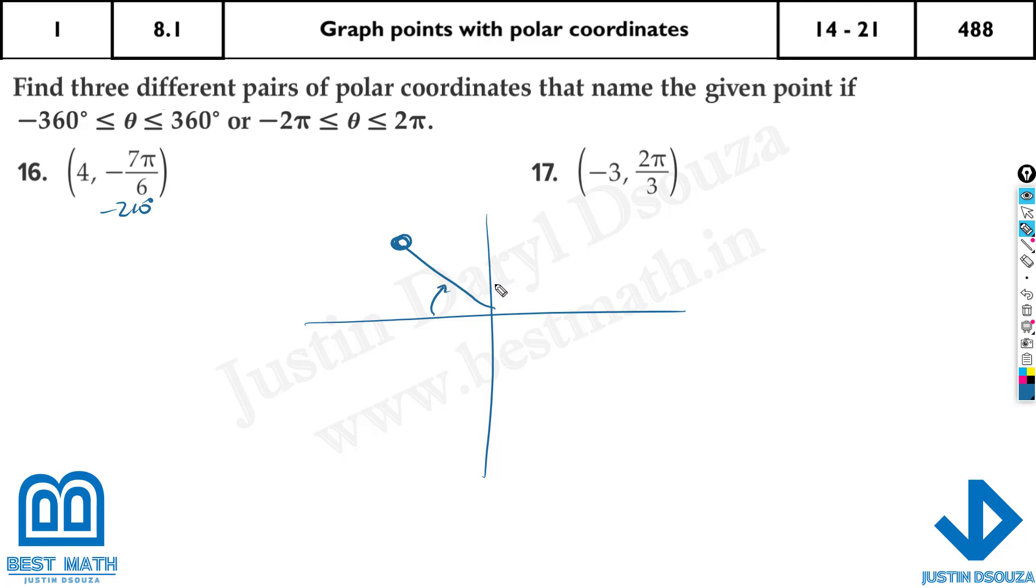Now to go the other side, what you need to do is just add 360 to this. It's going to be 150 from here to here. It's 150 degrees. So we have 4, 150 degrees. That is one more point. 4, minus 210.